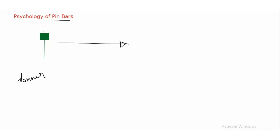Let me show you how the price behaves to form this hammer candlestick pattern. First, the price opens at a certain level. After opening, sellers came and pushed the market downside to a low level. Then buyers came and started to push the market upward, reaching the opening price, crossing it slightly higher, and closing near that level — forming the hammer candlestick pattern.